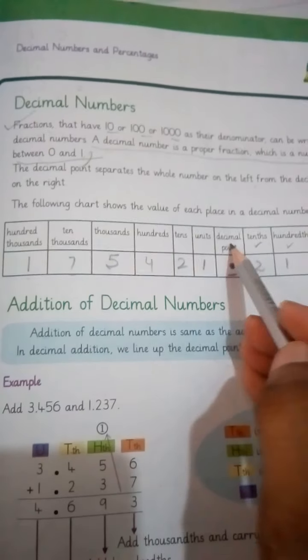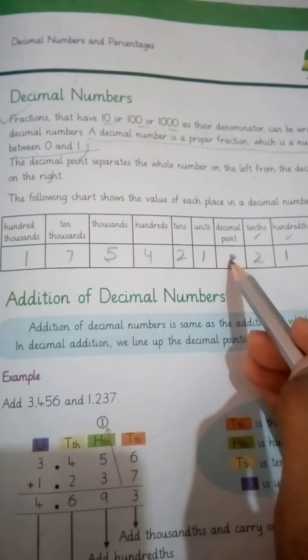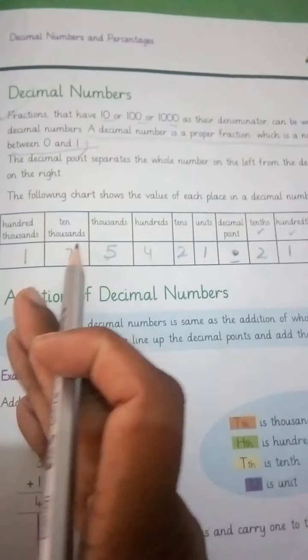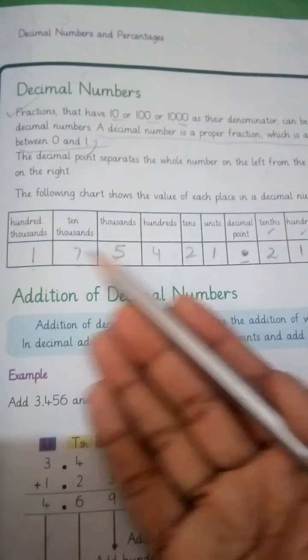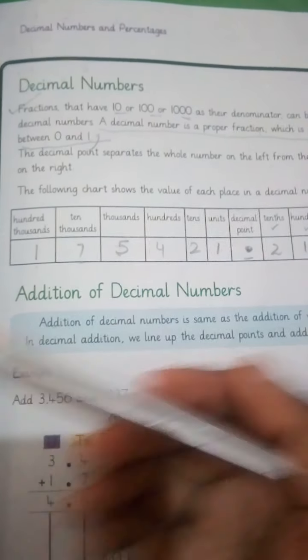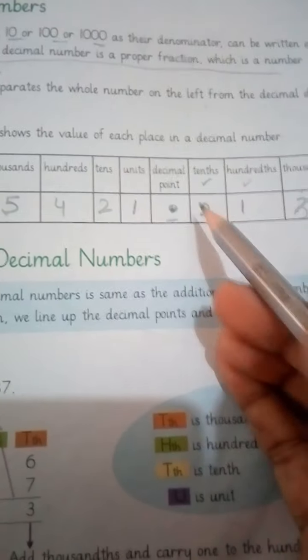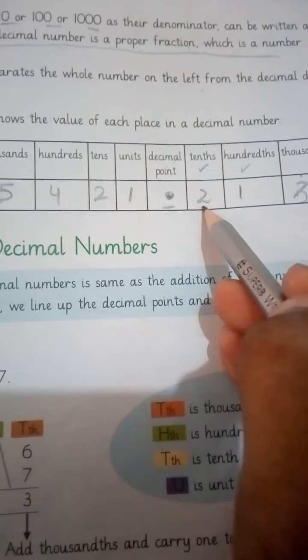We will start from the decimal point — I put a point here. On the left side, these are the whole number places: units, tens, hundreds, thousands, ten thousands, and hundred thousands. On the right side, the decimal part: the first digit after the point shows the tenths, the second digit shows the hundredths, and the third digit shows the thousandths.